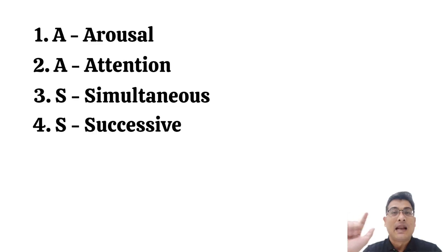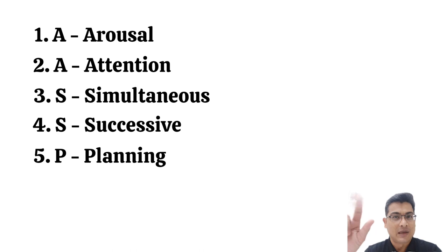Then comes Planning — P for Planning — which happens in the frontal and prefrontal areas. Planning means: we have gathered a lot of information about studying, now we create the blueprint — the course of action — how to study. After that, we actually study.